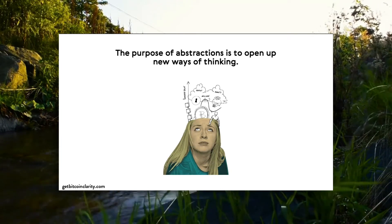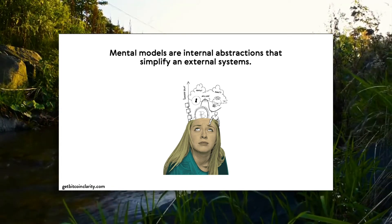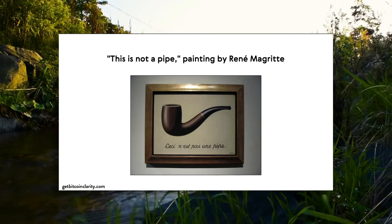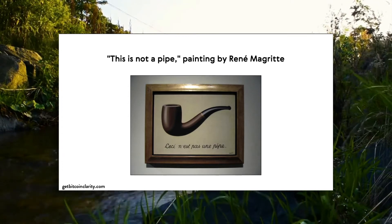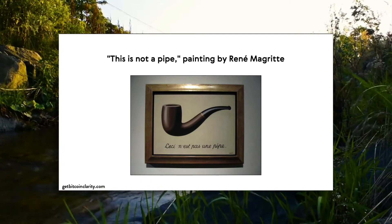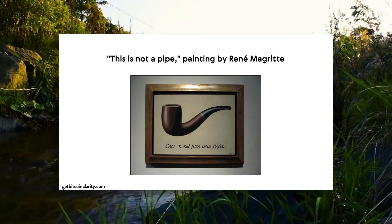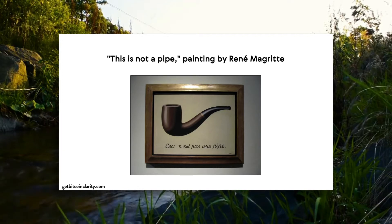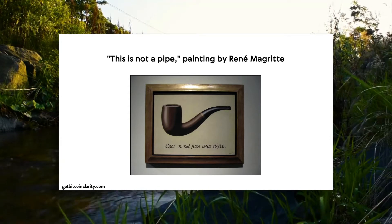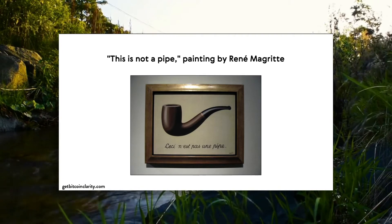The purpose of abstractions is to open up new ways of thinking. Mental models are internal abstractions that simplify external systems. There was this artistic movement called Surrealism, and I'm going to use this example because it helps us understand the idea of being literal versus being abstract. There's a painting called 'This Is Not a Pipe' — in French it literally says 'this is not a pipe.' What the artist meant was: this is not a pipe, this is a painting of a pipe. We all understand it's a painting of a pipe, but we just say 'it's a pipe.'